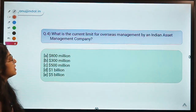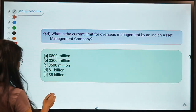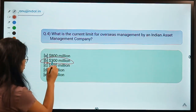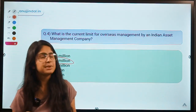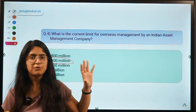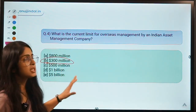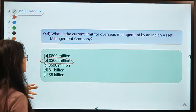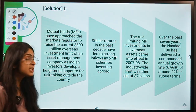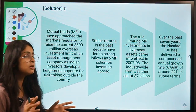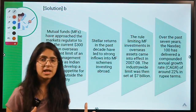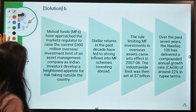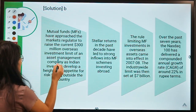Question four asks: what is the current limit for overseas investment by an Indian asset management company? The correct answer is option B — 300 million dollars. If an asset management company or mutual fund in India wants to invest abroad, the limit is 300 million dollars per company. They cannot put money beyond this limit into foreign investment avenues. Recently mutual funds have been asking regulators to increase this limit.